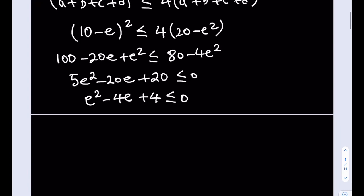And let's see what this means. When is this going to be less than or equal to zero? Only at one point. Because this is equal to e minus 2 quantity squared. And as you know, a square can never be negative. So the only option that's left for us is basically zero. So e minus 2 has to be zero, which means e has to equal 2.